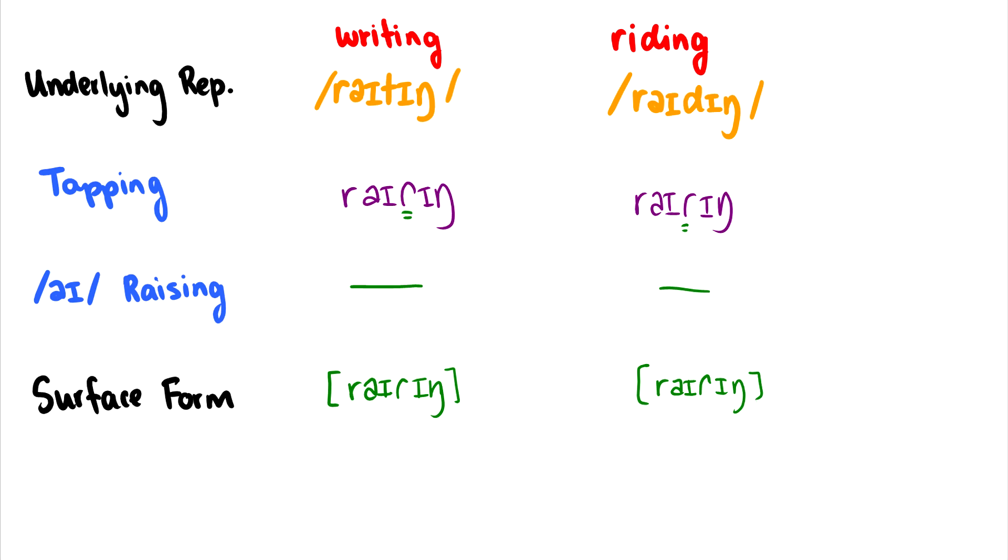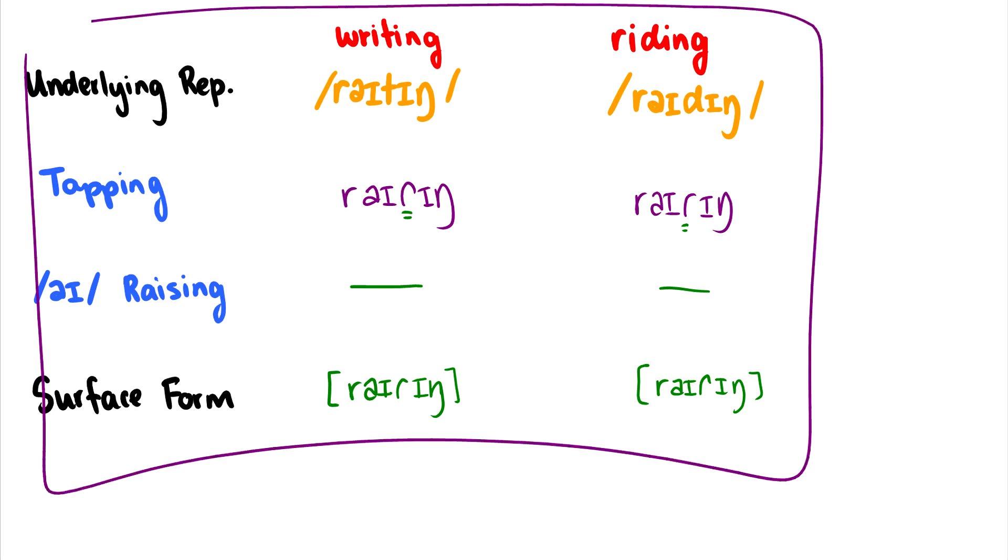Now, what does this mean? This means that these two processes can happen in two different orders. And depending on the order, we get different results. So most American speakers would have this set of rules, this ordering. Tapping would happen first and then eye raising.